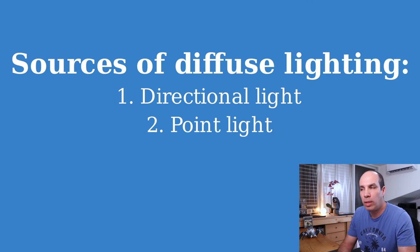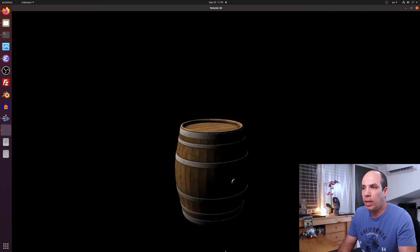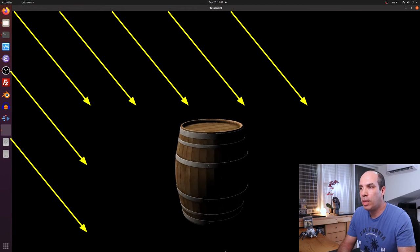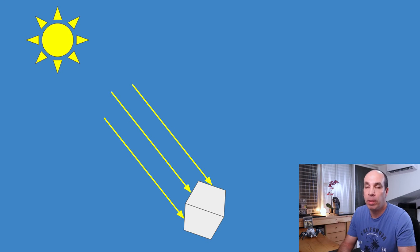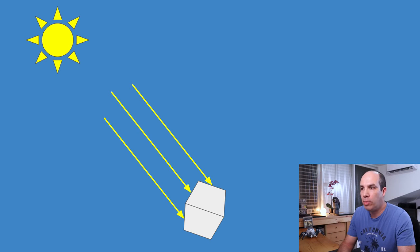We have a directional light and a point light. A directional light is a light source where we don't care about its exact location, only the direction — we have a light vector and that's it. Every triangle in the scene facing a directional light is hit by the same light vector. The classic example is the sun, which is located so far away that its light rays are all parallel to each other, so its location doesn't come into play in directional light calculations.